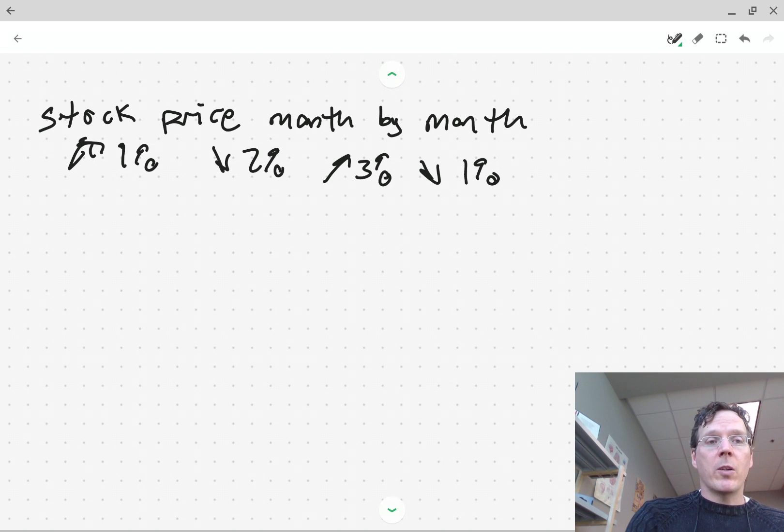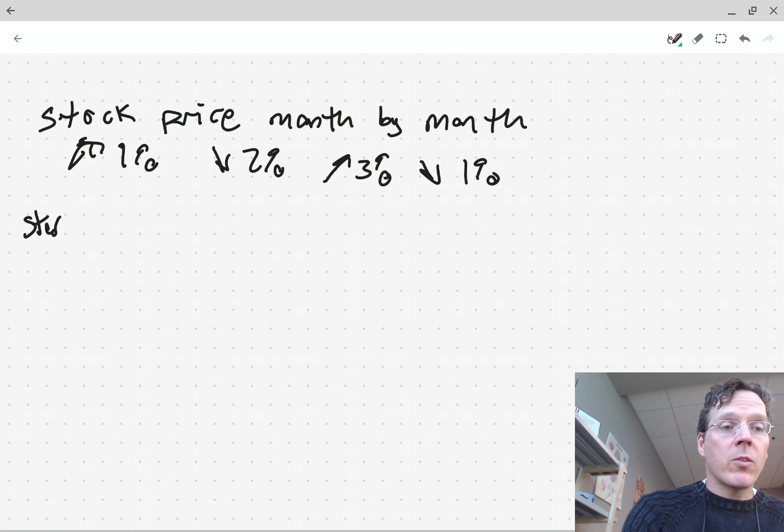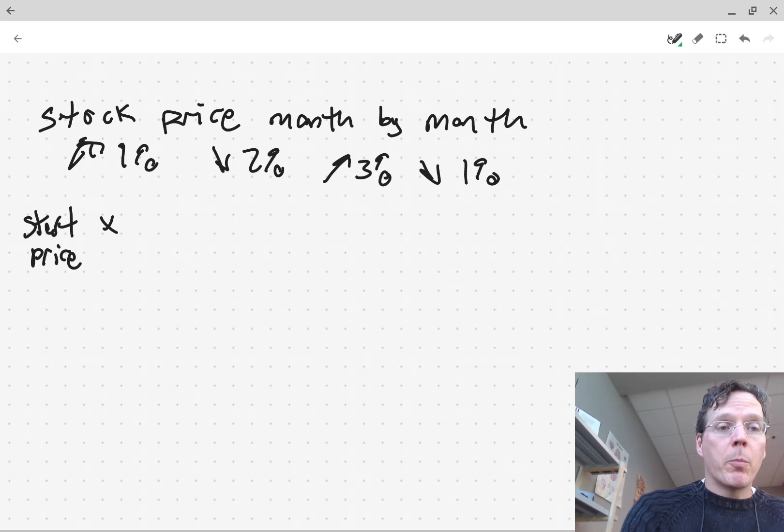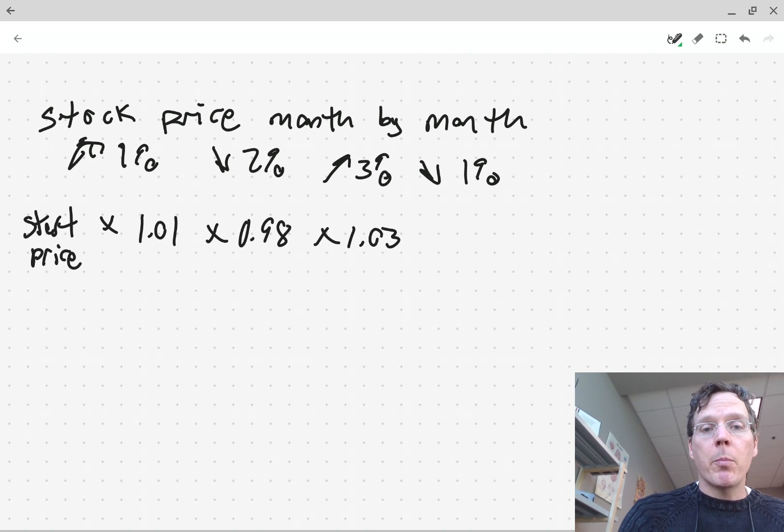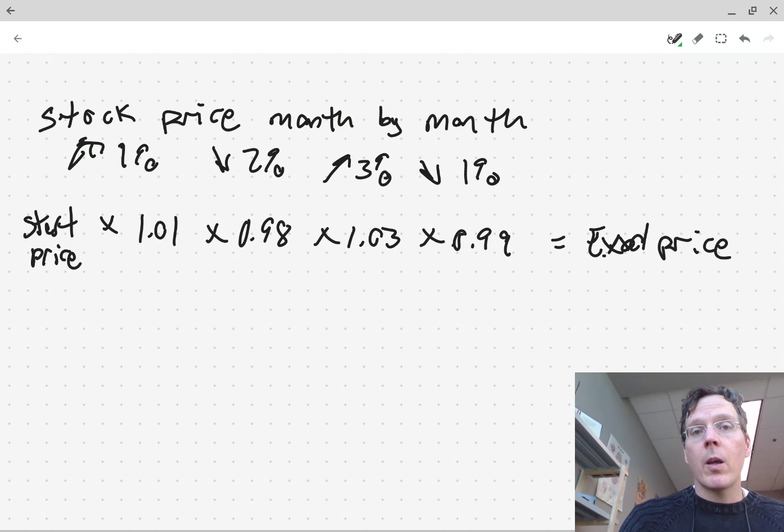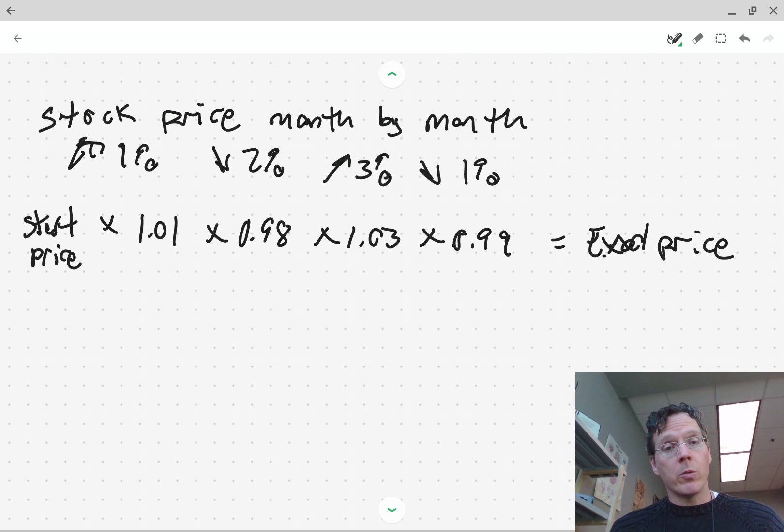And I'm just going to give you a simple example here to highlight an instance where you'd be interested in a relative change rather than an absolute change. So you have a stock price and it went up one percent, and you're looking at it month by month. It went up one percent, then down two percent, then up three percent, and then down one percent. So if we were to take the starting price and multiply it by 1.01, then multiply it by 0.98, then multiply it by 1.03, and then multiply it by 0.99, then we would get the end price.